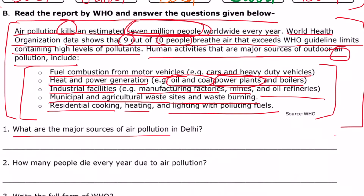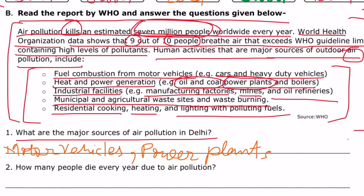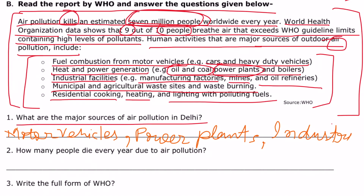Question: what are the major sources of air pollution in Delhi? First, motor vehicles — they pollute the air. After that, power plants using oil and coal pollute our environment. Then, industries and factories also pollute our environment. Next, you can write waste burning — whether agriculture waste burning or municipal waste burning also pollutes our environment.